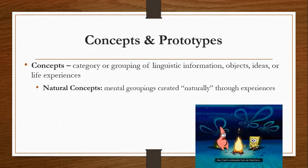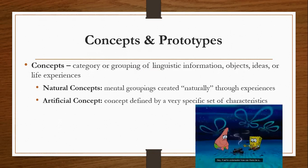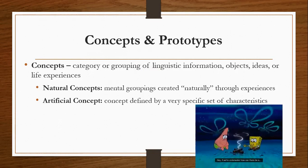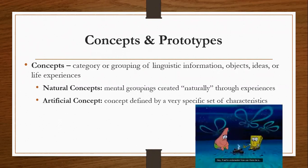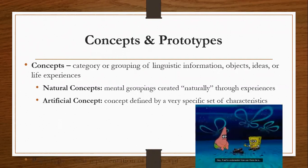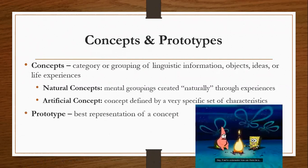The other form of concepts are artificial concepts, those defined by a very specific set of characteristics that are always exhibited, such as what defines basic shapes. So the roundness of a circle or the four lines of a square are always the basic characteristics. And within our concepts we have prototypes — the best representation of a concept available. So a car could be a prototype for forms of transportation.